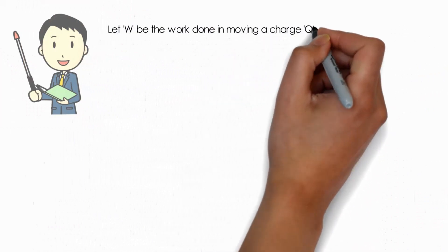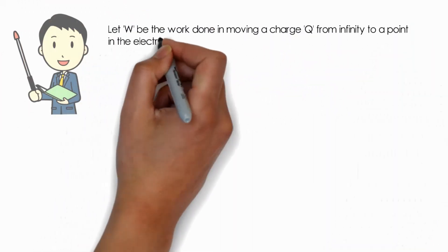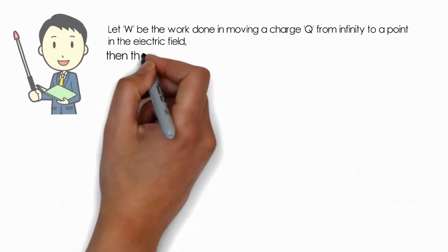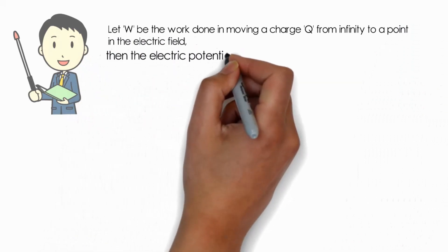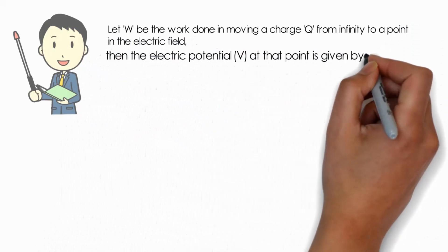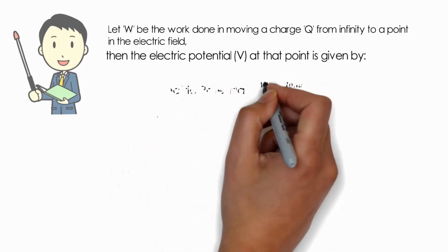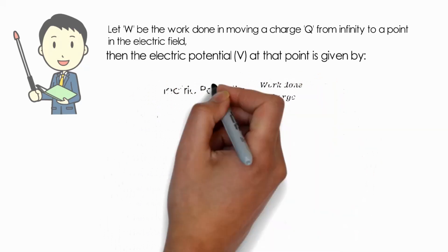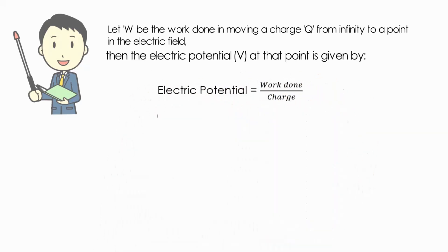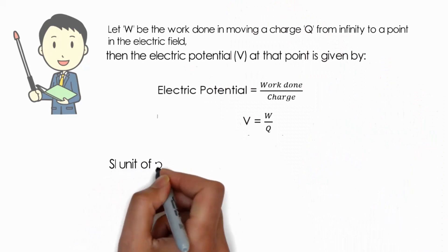Let us deduce the relationship between charge, work done, and potential. Let W be the work done in moving a charge Q from infinity to a point in the field. Then the electric potential V at that point is given by the formula: V equals W divided by Q, where V is electric potential, W is work done, and Q is charge. The SI unit of potential is volt, denoted by V.